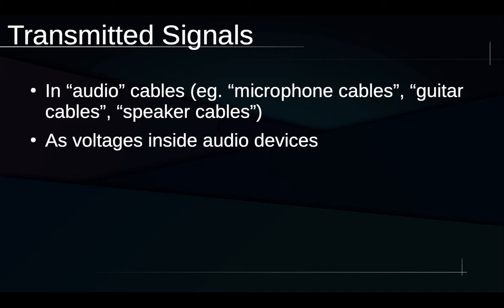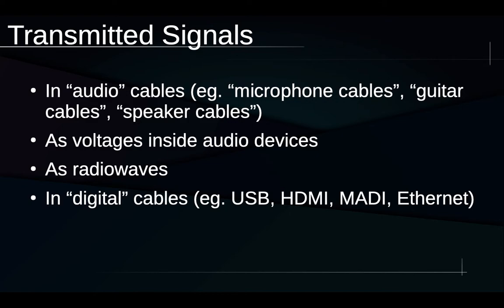There are other forms of transmitted signals. Inside our audio devices, there are little wires or little runs of metal that are carrying electrical voltages representing, carrying sound. Sound is transmitted in the form of radio waves, AM radio, FM radio. And it's transmitted increasingly in digital cables, such as the USB cables that we might use to connect our computers to some kind of professional audio hardware. The HDMI cable that we might use to send a signal to a television. And as part of that digital signal, there is some information about sound. MADI is a type of cable that is used specifically for professional digital audio hardware that is carrying many channels of digital audio.